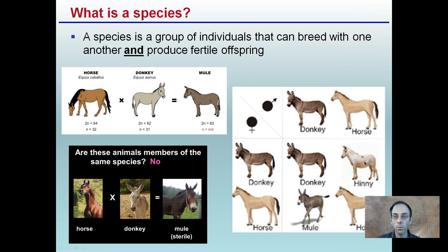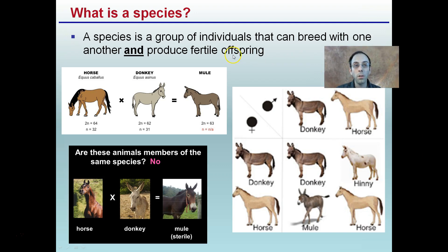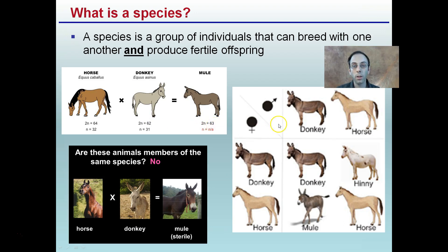So what is a species? A species is a group of individuals that can breed with one another and produce fertile offspring. That last part is very important. A horse and a donkey can produce a mule, but the mule cannot produce fertile offspring. A horse has 64 chromosomes in its gametes, a donkey has 62, and the mule produced from combining these has 63 — an odd number — meaning it cannot produce gametes and is therefore sterile.